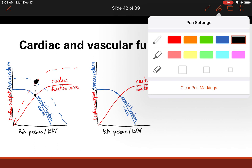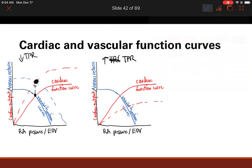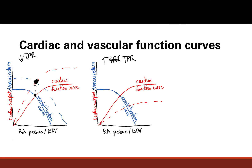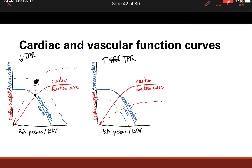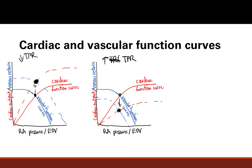If you increase total peripheral resistance, you get the exact opposite. The cardiac function curve decreases because there's increased afterload — the heart has to work harder against more resistance. The venous return curve also shifts down because there's more traffic on the highway with fewer lanes, so less venous return. Looking at the new intersection, we see decreased cardiac output with increased total peripheral resistance. That's it for Starling curves and cardiac vascular function curves.